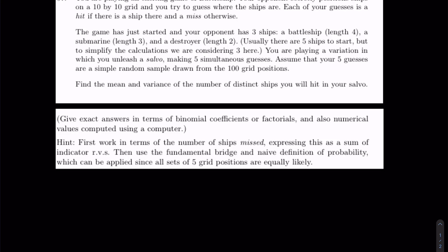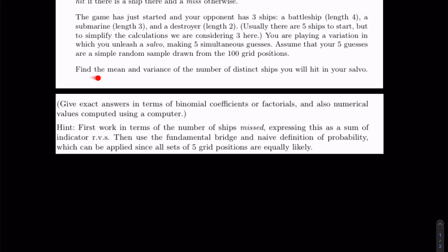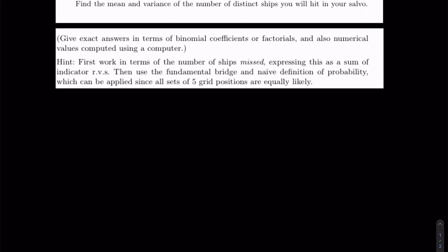We assume that the five guesses are a simple random sample from the grid of 100 positions. We are asked to find the mean and variance of the number of distinct ships that we will hit. The hint is to express the number of hits in terms of misses, and express that as a sum of indicator random variables.